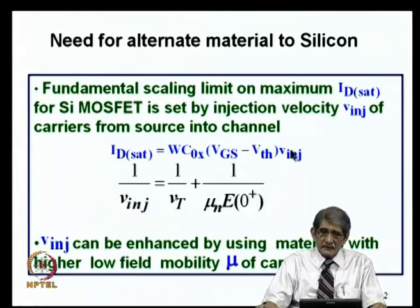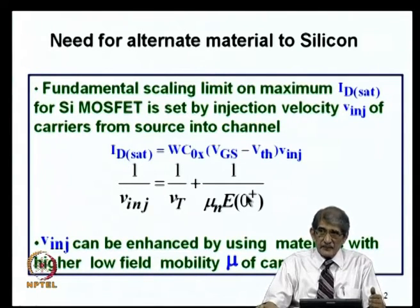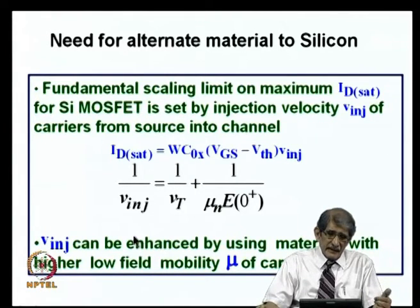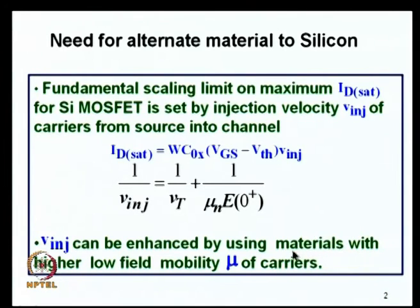Injection velocity depends on thermal velocity, low-field mobility, and the electric field at the source end of the channel. If you keep mobility as high as possible, injection velocity equals thermal velocity and you can have ballistic transport practically. The entire aim is to improve injection velocity by increasing mobility. We have seen how to do that by reducing doping and using SOI. Now, if you go to a material that basically has higher mobility, that is the alternative way - that is why one looks into other materials.